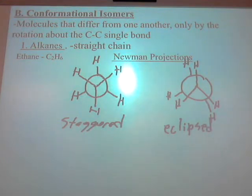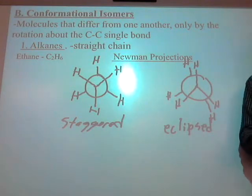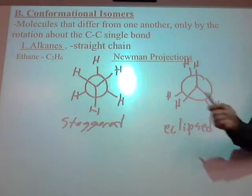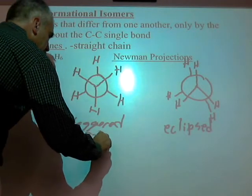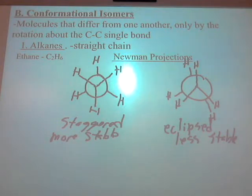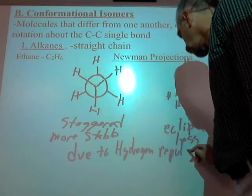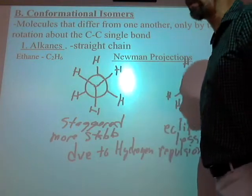Now we already know that electrons are negatively charged and orbiting all these hydrogen atoms. From VSEPR theory we also know that electrons repel each other. So which of these guys do you think is going to be more stable? The staggered, because they're further apart. They're going to repel each other. Although they can go in and out of these conformations all the time, they're going to spend more time in the staggered conformation — which is more stable — than the eclipsed, simply because of hydrogen repulsion.